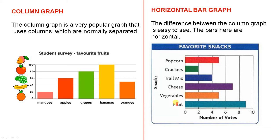Here we have six different types of snacks and here are the number of votes. We can see that fruit is the most popular and crackers the least popular.